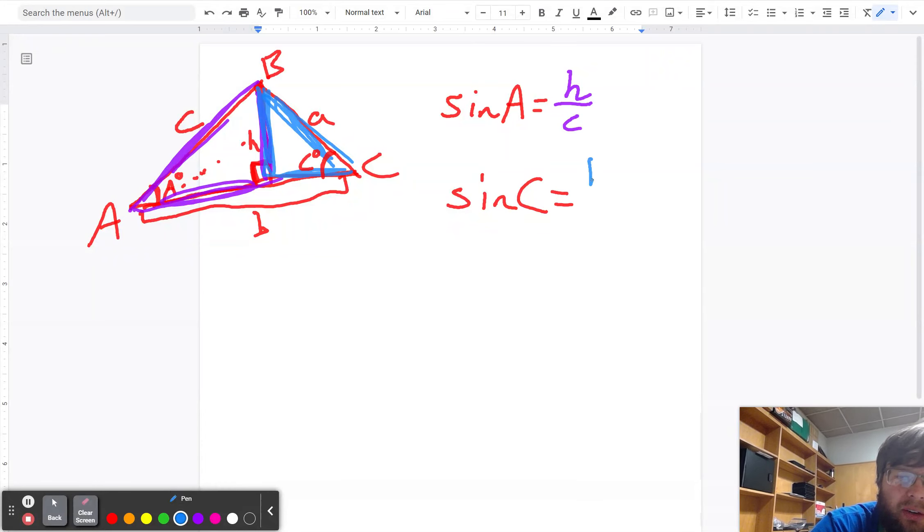Sine of C is equal to, well, now I'm looking at the blue triangle, H over A. Because H is the opposite for the sine angle C, and A is the hypotenuse for angle C.